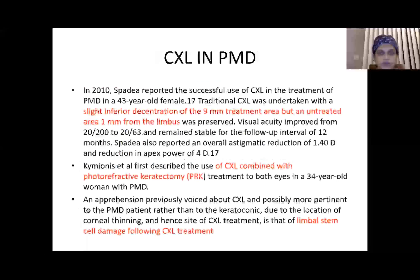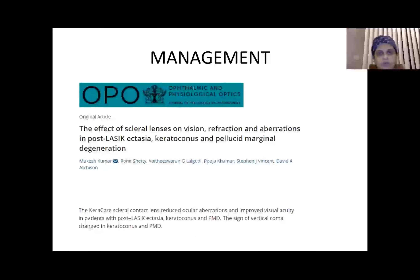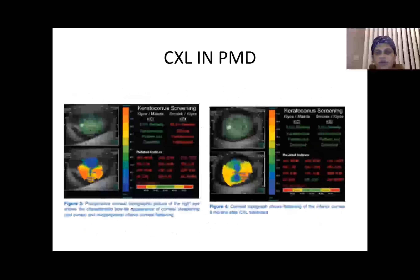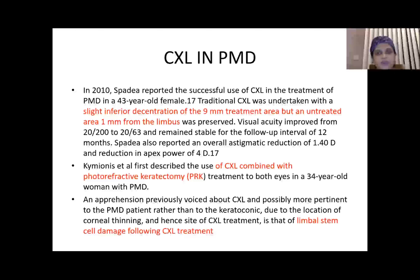Scleral contact lenses work well in both keratoconus and PMD, reducing ocular abrasions and improving visual quality. For crosslinking in PMD, the 9 mm treatment area should be slightly decentered inferiorly, while maintaining an untreated zone 1 mm from the limbus to avoid limbal stem cell damage.